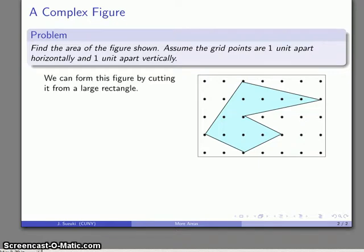Here we'll assume our grid points are exactly one unit apart horizontally and vertically. The way that we might begin is we might consider how would we form this figure from a large rectangle. We might take a large rectangle and start cutting out the pieces that we don't want or need in the figure.